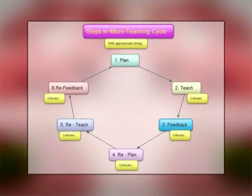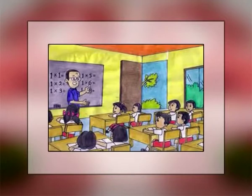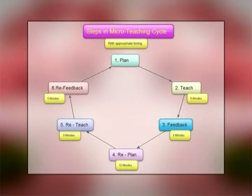In the teach session, the pupil teacher teaches the lesson to a small group of pupils, preferably a peer group, in a simulated condition. It is supervised by the teacher educator and peers using an appropriate observation schedule. The lesson may be videotaped if facilities exist. For the feedback session, either video recording is done or classmates note down critical comments on the observation schedule. These critical comments are analyzed after teaching is over and feedback or suggestions are given to the pupil teacher on the basis of these points.